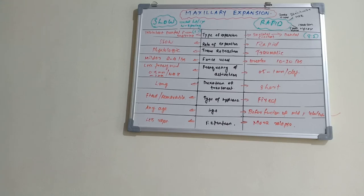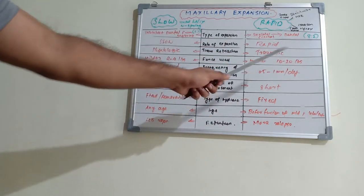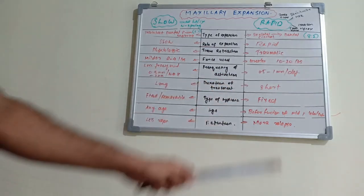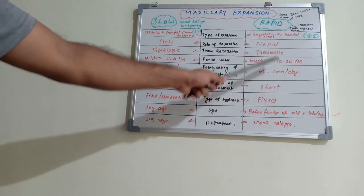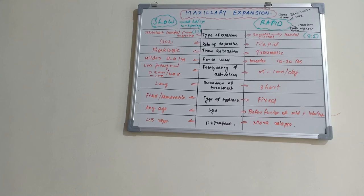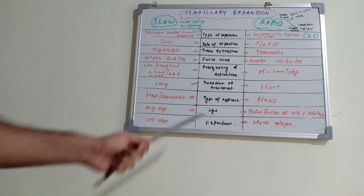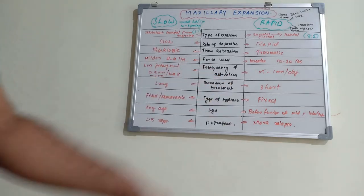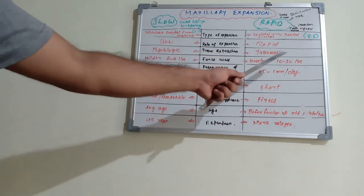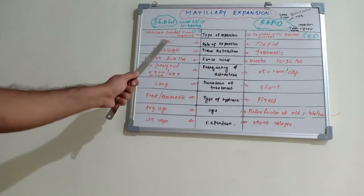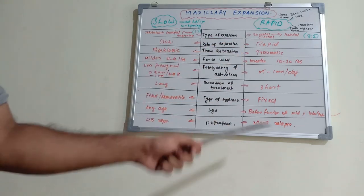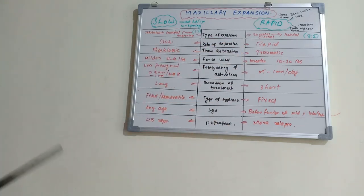That's the basic difference between slow and rapid maxillary expansion. The name itself gives many clues — the force applied and the frequency of activation are very much related to rapid expansion, with a more frequent interval. The main drawback of rapid expansion is that it is more traumatic to the tissues, but the advantage is that treatment is completed very quickly. That's all about maxillary expansion — slow and rapid. Thank you!